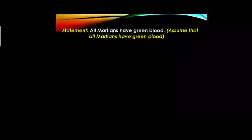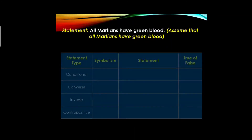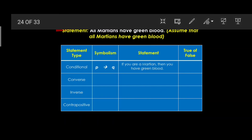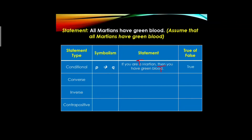For example three: 'All martians have green blood.' We'll assume this as given. For the conditional statement: 'If you are a martian, then you have green blood.' Since we assume all martians have green blood, both the hypothesis and the conclusion are true, making this a true conditional.